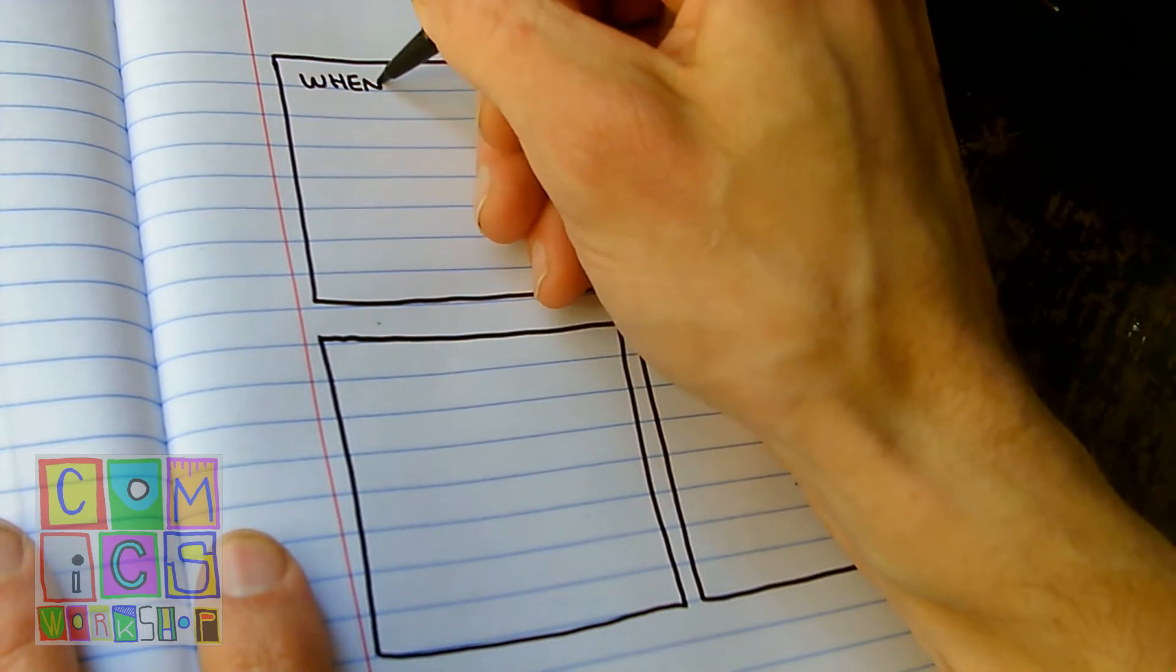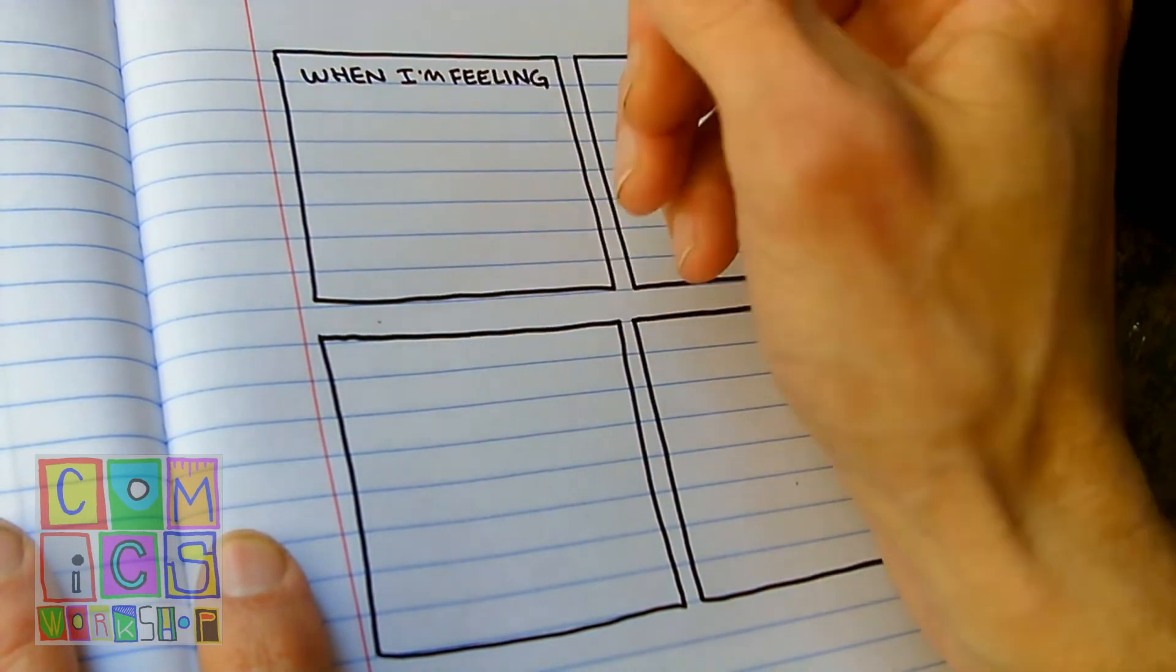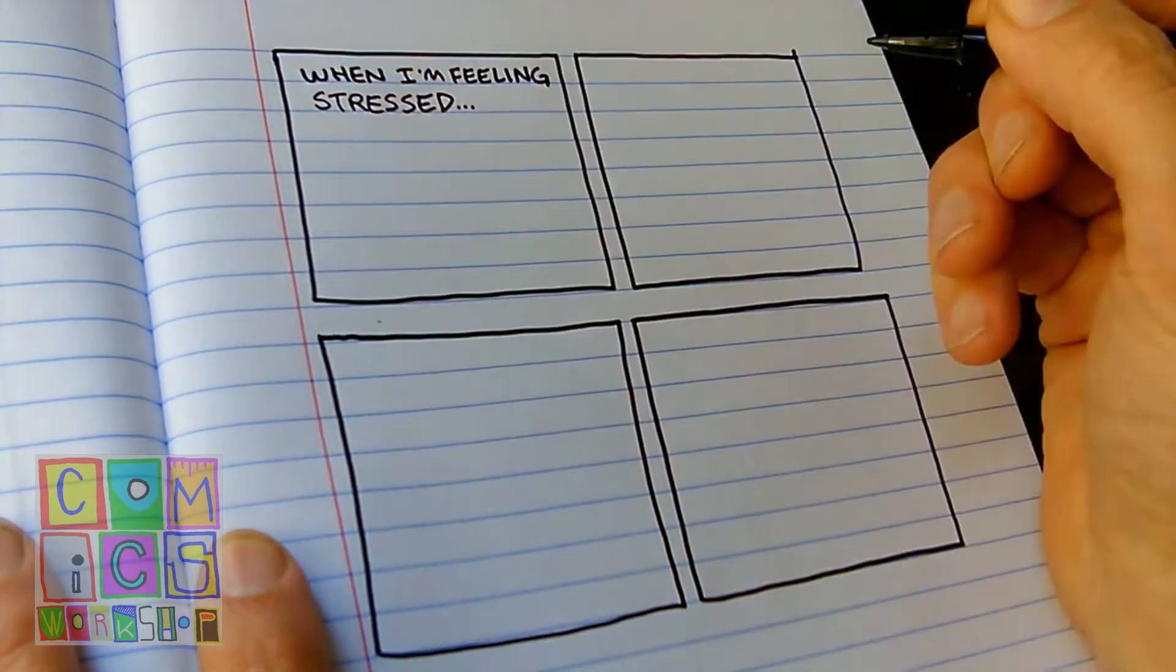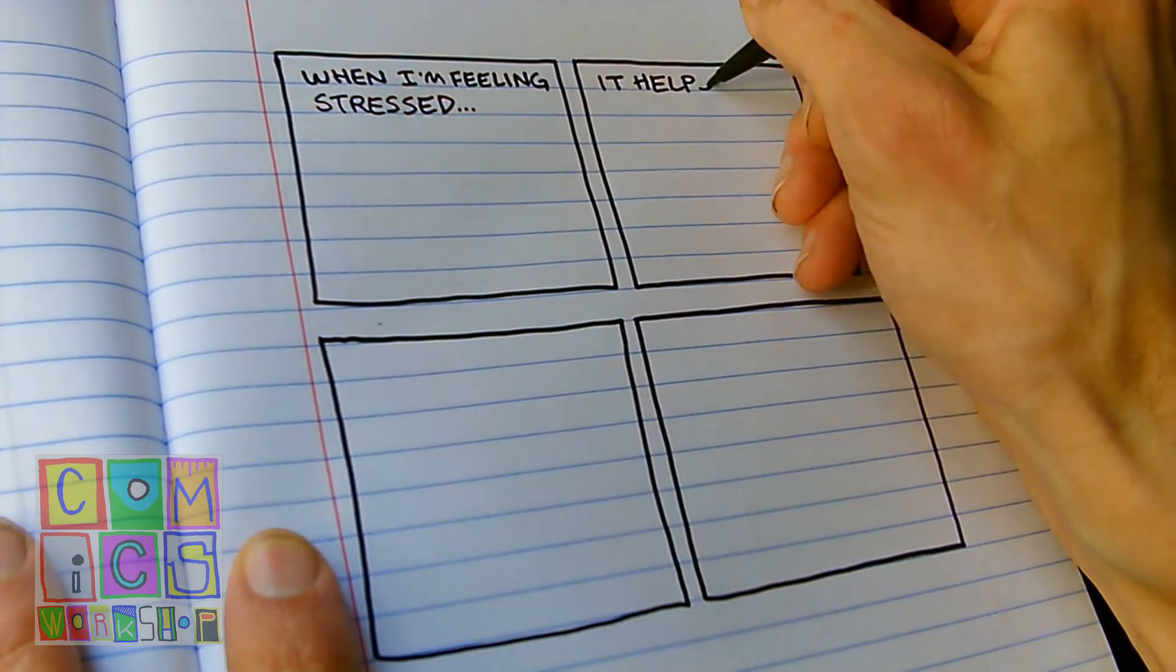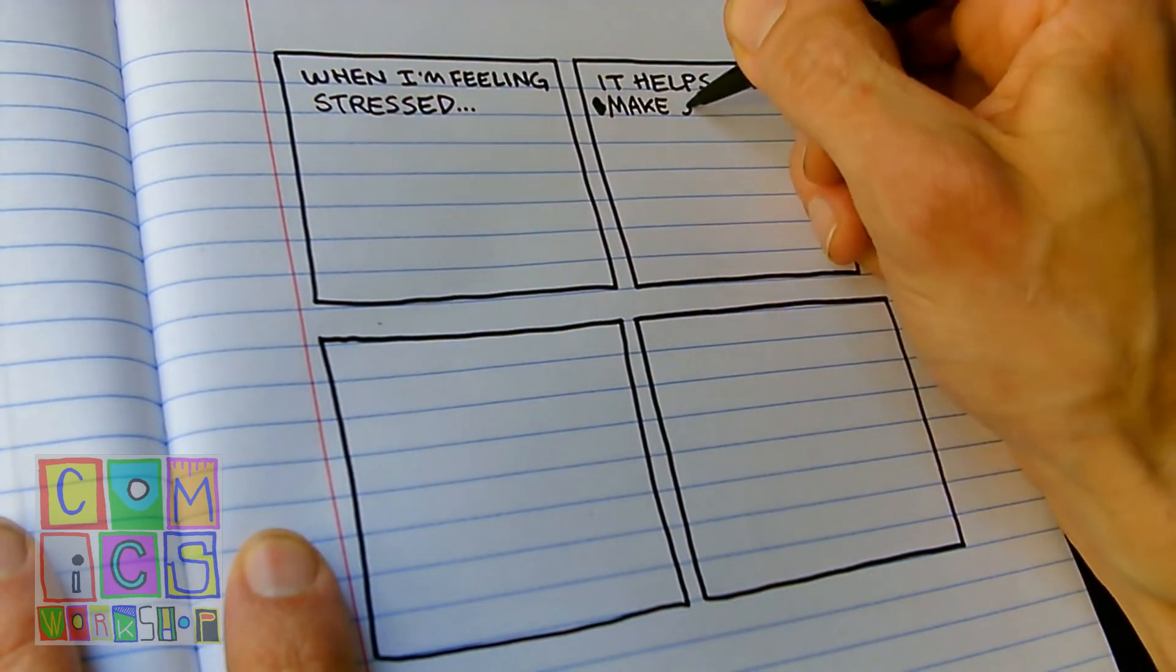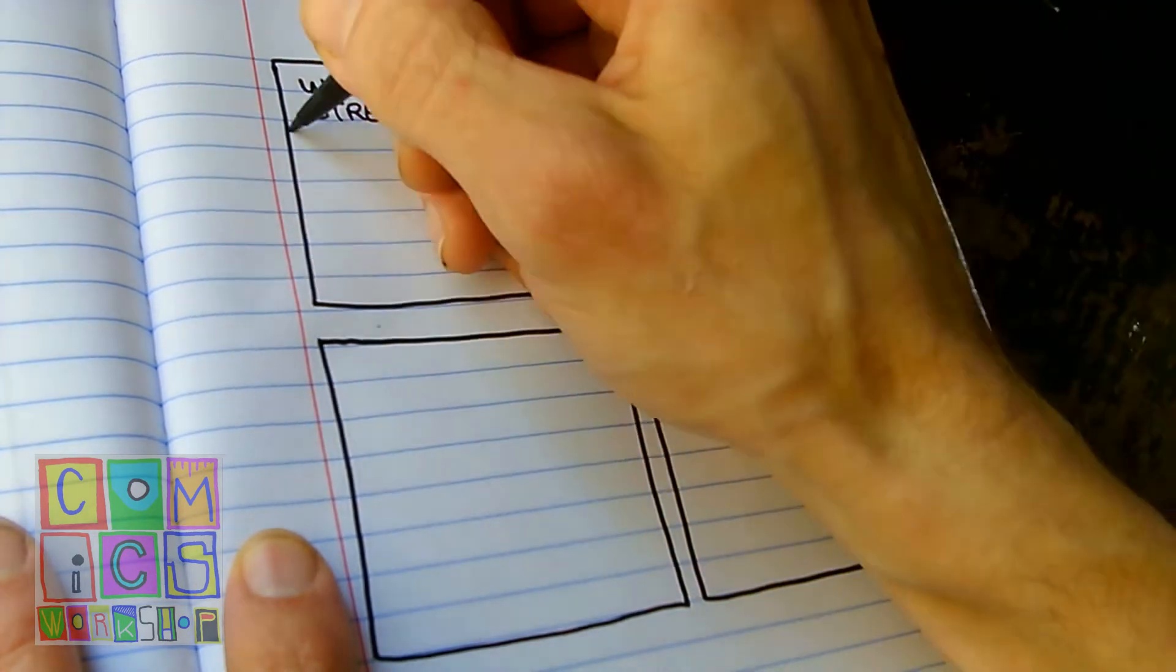So when I'm feeling, and today I don't know, I'm feeling a little stressed. It helps to make something. I'm using a pen, not a pencil. This doesn't have to be perfect. I can't erase, just have to put my thoughts down.